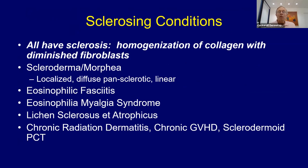Let's start off with the sclerosing disorders. These all have in common sclerosis of collagen — homogenization of the collagen with a decrease in the number of fibroblasts, versus an increase in fibroblasts, which is what we see with fibrosis. We have several of these diseases: scleroderma, morphea, eosinophilic fasciitis, LSNA, and chronic radiation dermatitis.